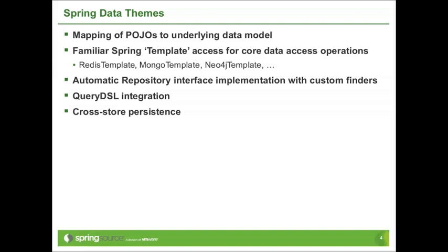Last but not least, we'll also see an example later today of what we call cross-store persistence. This is the term we use to describe an entity — let's say a JPA entity — that might have one or two fields that you would like to have managed in a different data store. This cross-store persistence allows you to deal with one domain model but have its fields persisted and managed in different database technologies. With that, I'd like to hand off the talk to Emil, who will go over the NoSQL database landscape and then dive deep into what we've done together over the past year of heavy coding around integrating Spring and Neo4j.